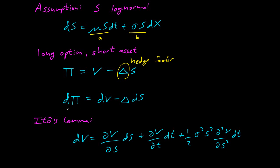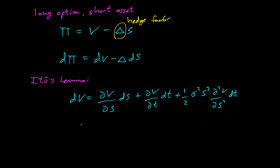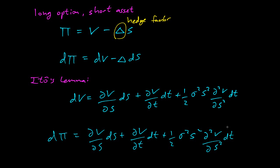So now we can write dπ. Expand that out a bit. So dπ equals dV. Let's just copy this down: ∂V/∂S dS plus ∂V/∂t dt plus half times the second derivative stuff, then minus Δ dS.